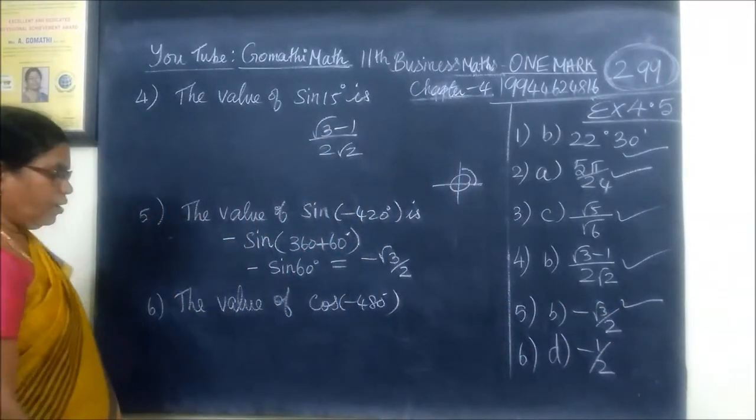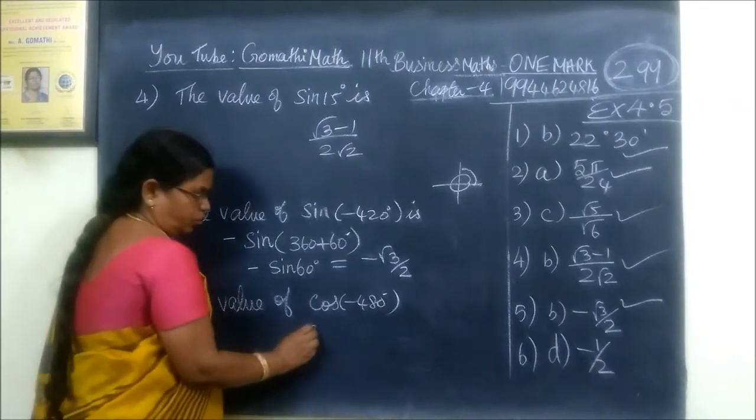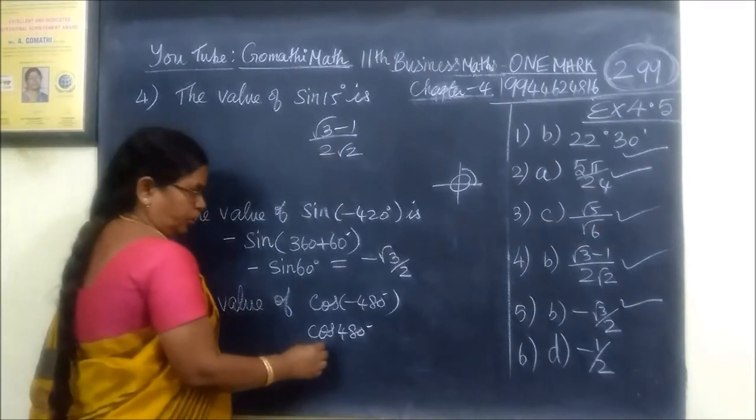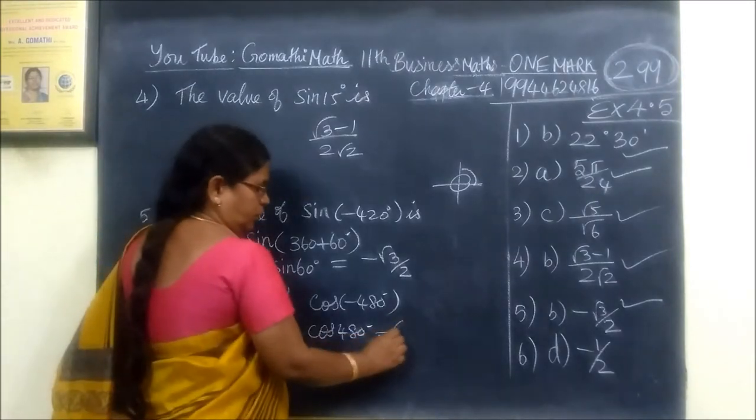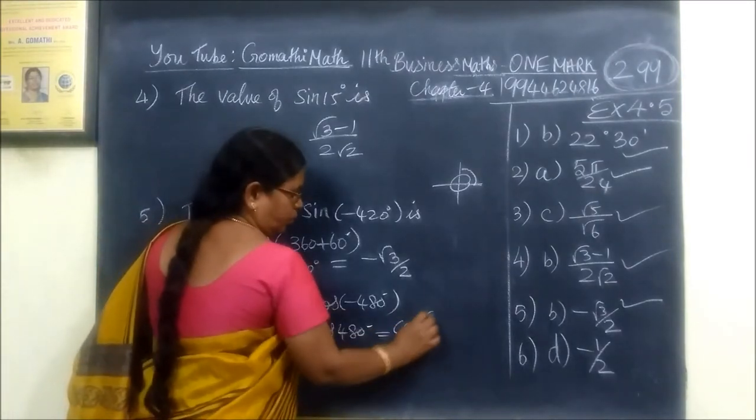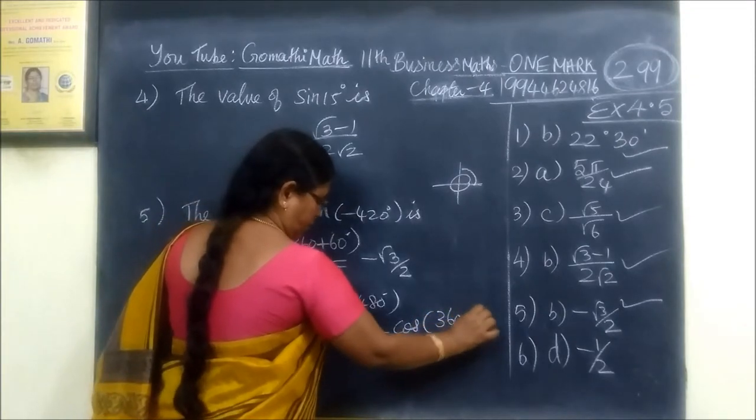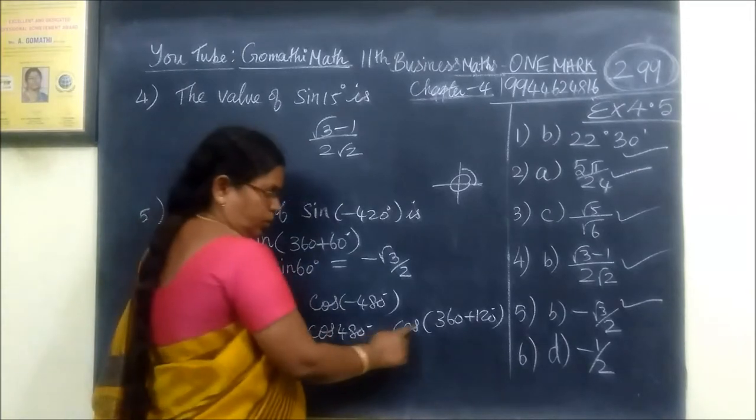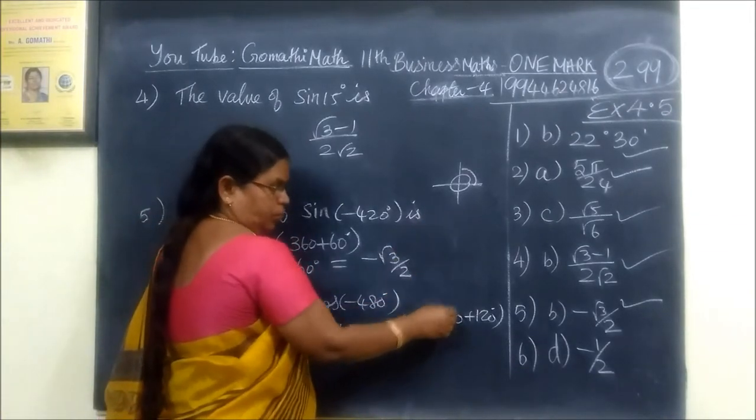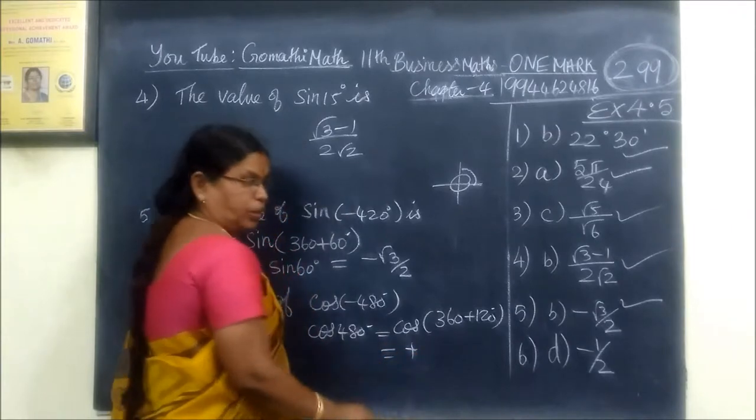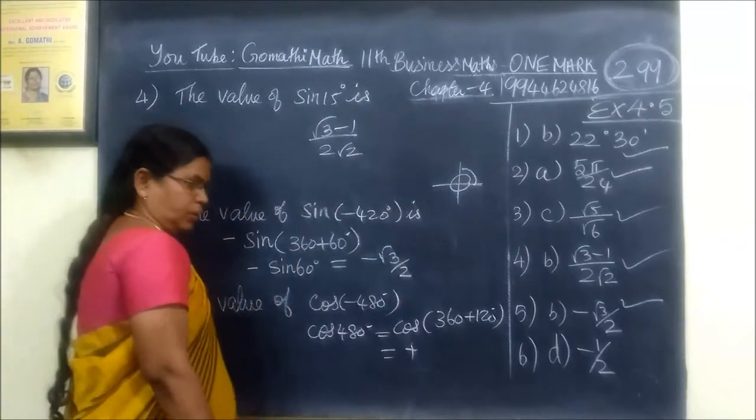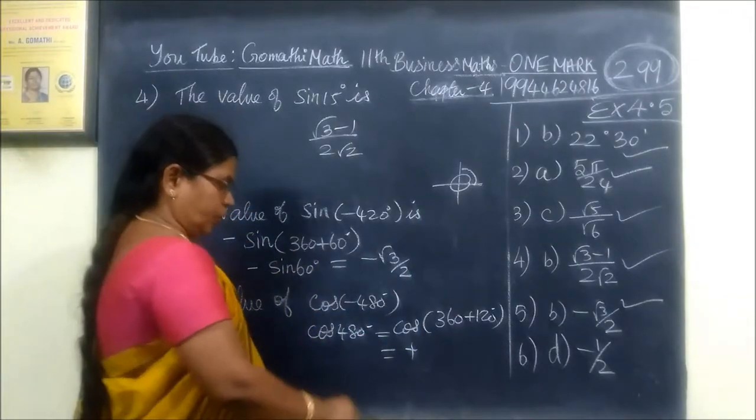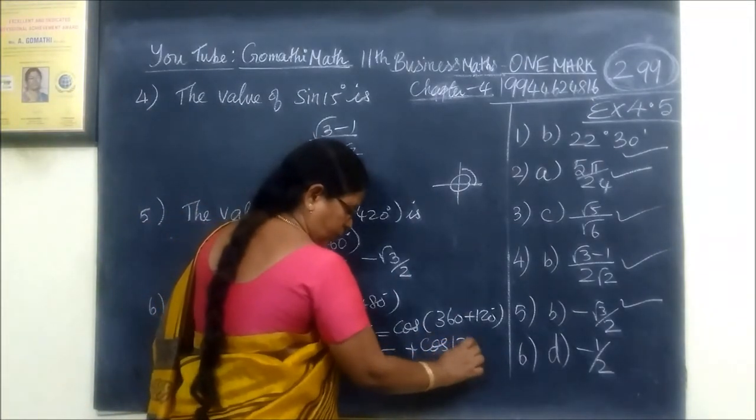That is the value of cos of minus theta. Cos of minus theta plus theta. So minus theta plus theta, this is equal to cos of theta. Cos of theta there, cos of theta is 0. Cos of 360 plus theta equals theta.